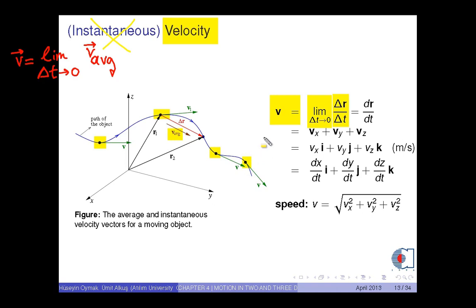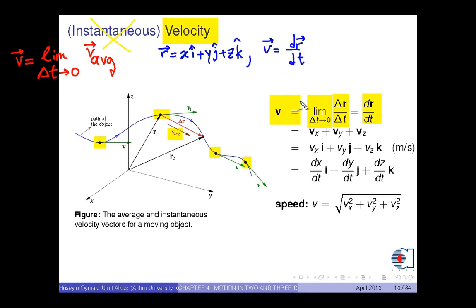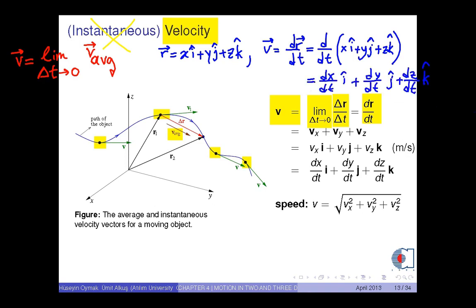Using the explicit form of the position vector, vector r equals x i-hat plus y j-hat plus z k-hat, the velocity v equals dr over dt. That is, d over dt of (xi plus yj plus zk), which equals dx over dt i plus dy over dt j plus dz over dt k. It is natural to interpret dx over dt as the magnitude of the velocity vector in the x direction, with similar interpretations for dy over dt and dz over dt.